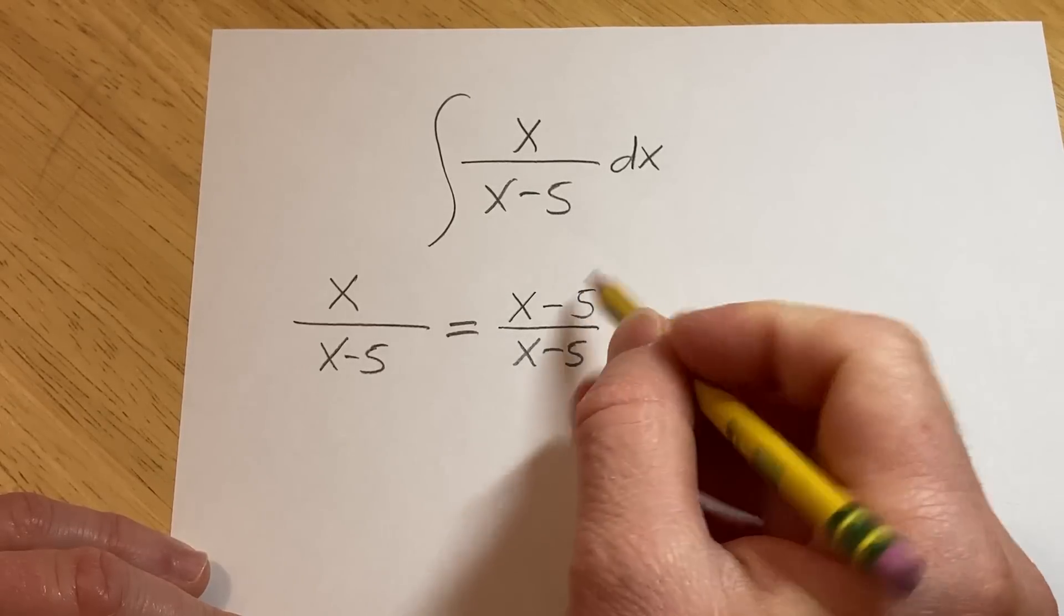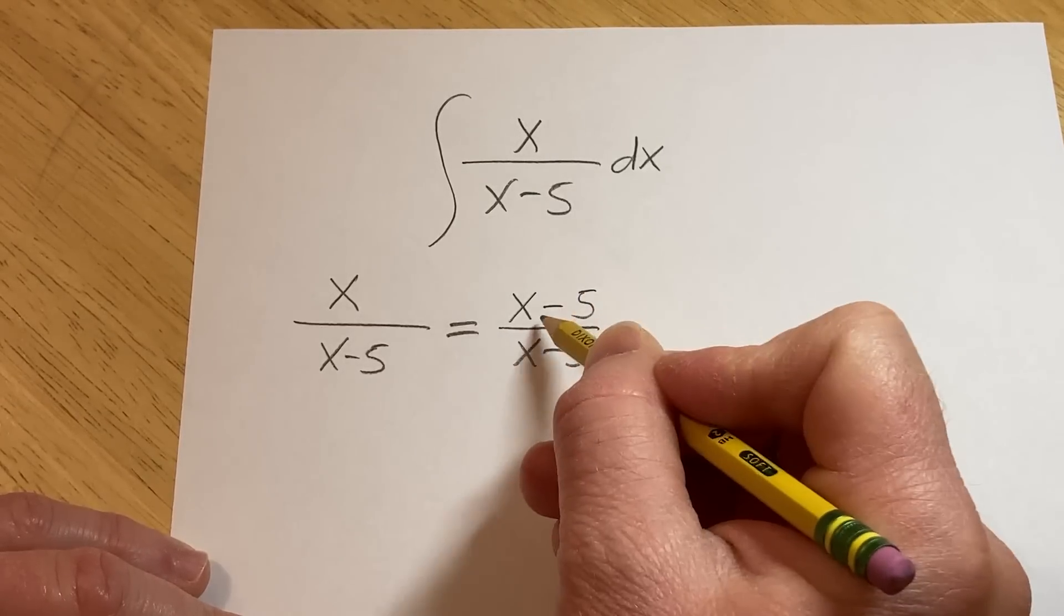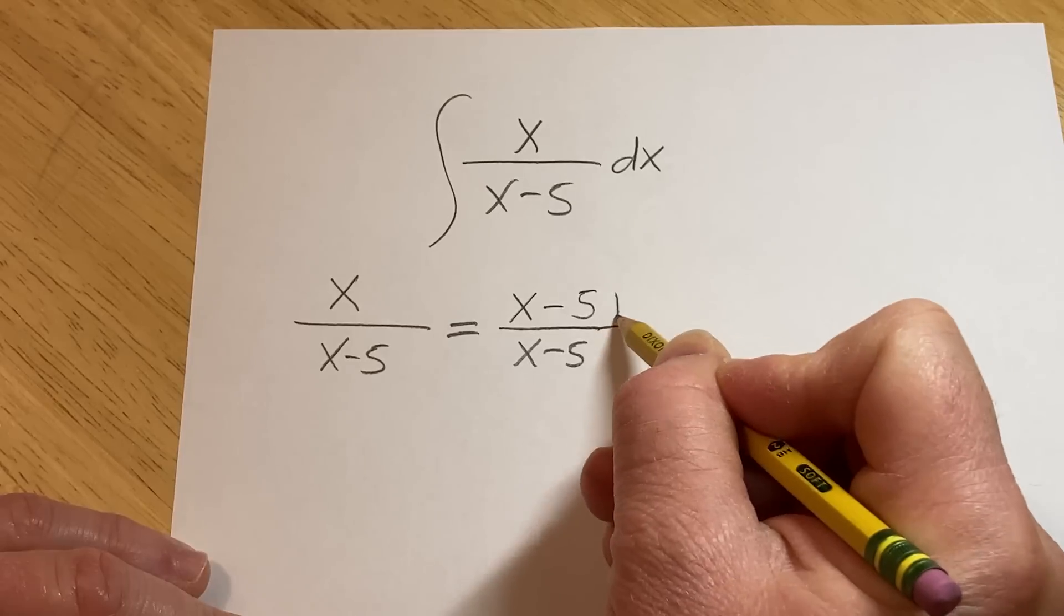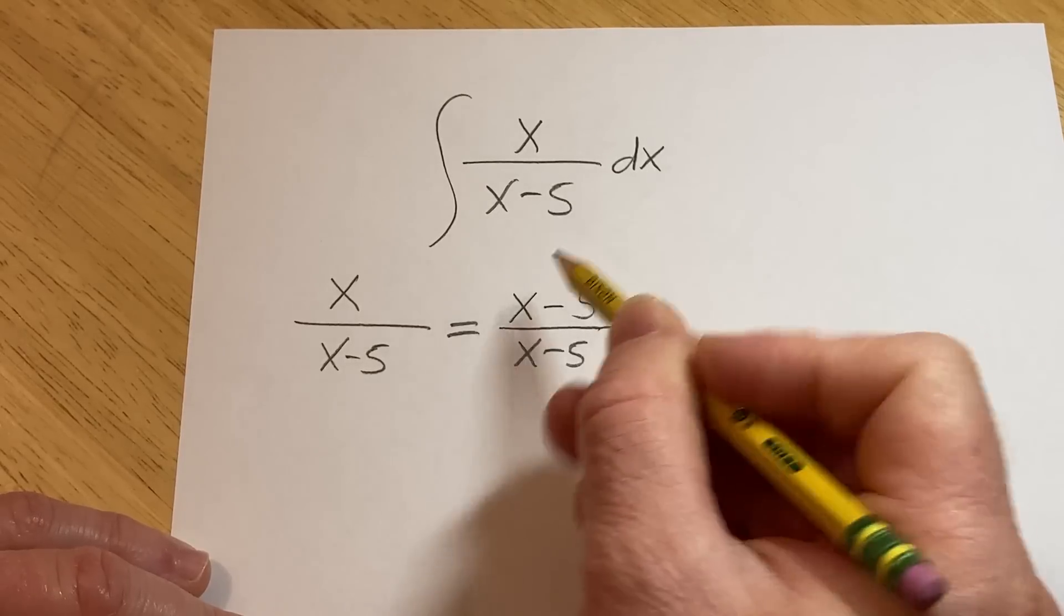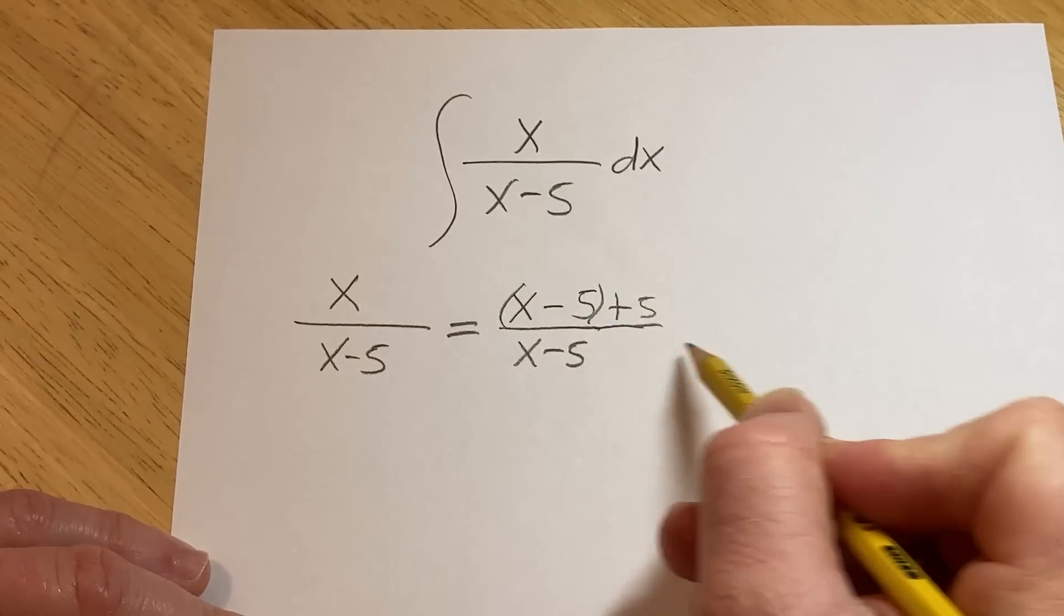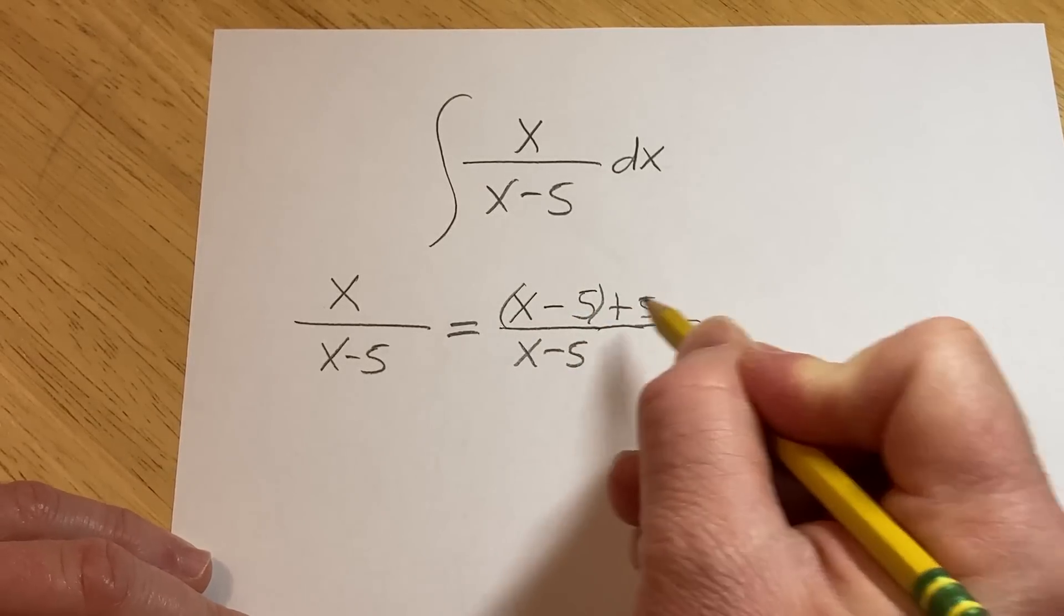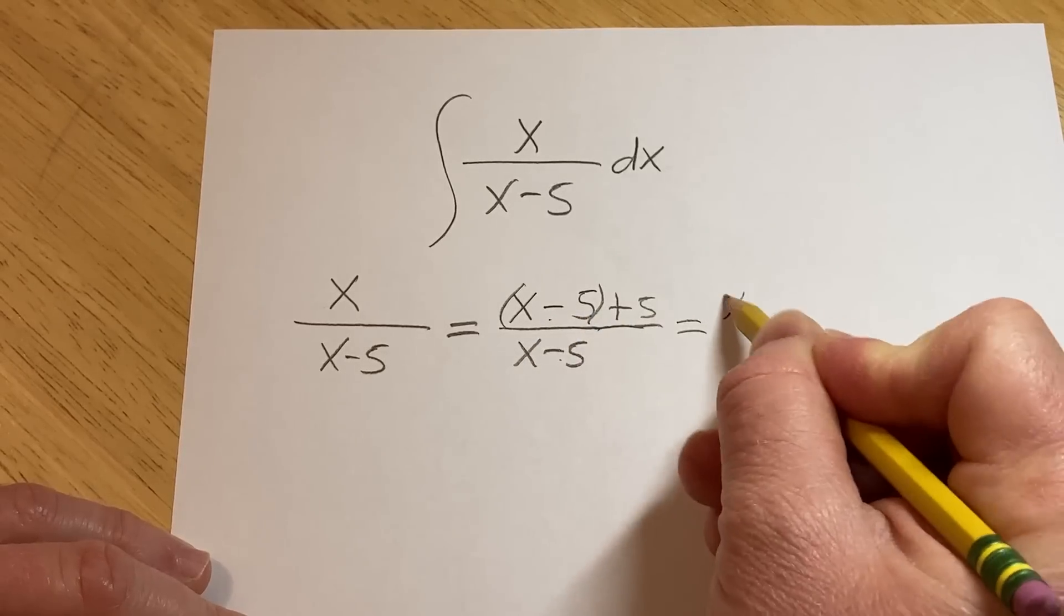So if I put an x minus 5 here, it's wrong. I have to get rid of the 5, so I have to add 5. And so now what you do is you break this up into two different fractions. It's going to be x minus 5 over x minus 5.